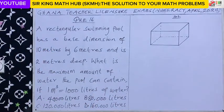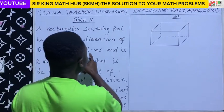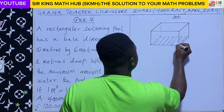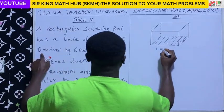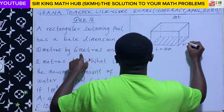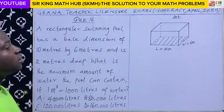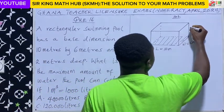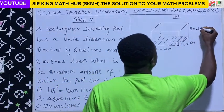This is our rectangular swimming pool. The dimensions were given as 10 meters by 6 meters. The length is the longest side, so the length was given as 10 meters. The width was given as 6 meters. And we are told that this pool is 2 meters deep, so the deepness of the pool also represents the height of the pool. So the height is given as 2 meters.